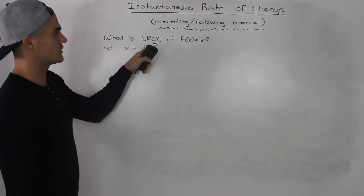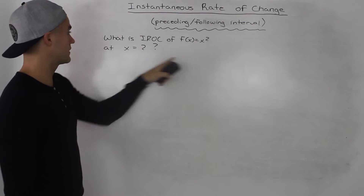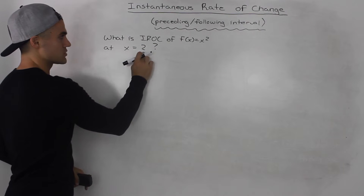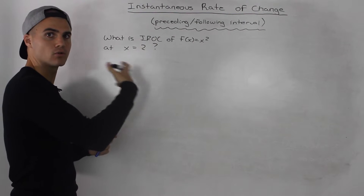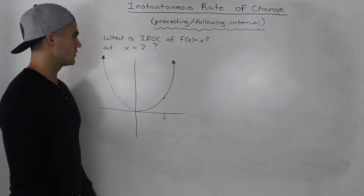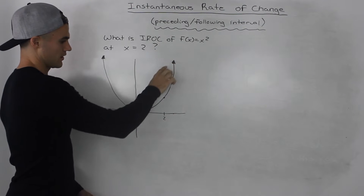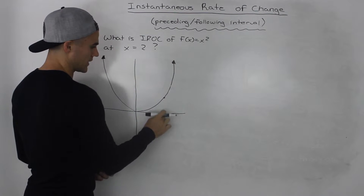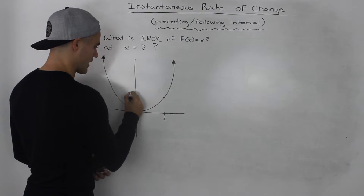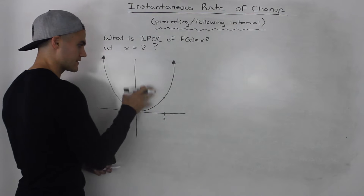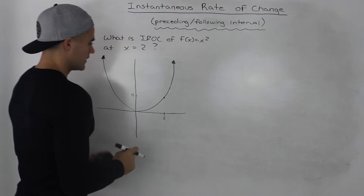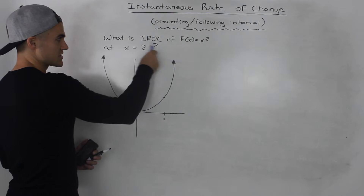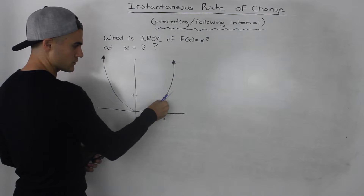What is the instantaneous rate of change of f(x) = x² at x = 2? Notice how we specify at x = 2 because instantaneous rate of change happens at only one point. Drawing this out, this is x squared, and at an x value of 2 we would have a y value of 4. We need to find the slope of the tangent, which is the same as the instantaneous rate of change at x = 2.